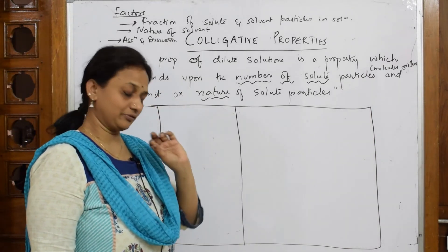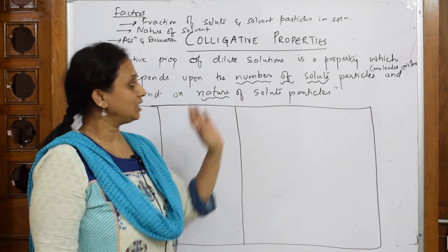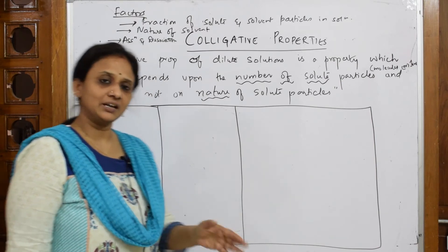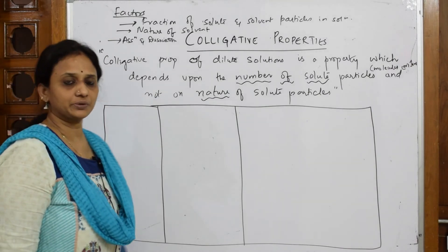Never attempt—by mistake also—don't write nature, please. The whole concept will go wrong. We are basically speaking in terms of number only, mole fraction only. So based on these three factors, you have four types of colligative properties.